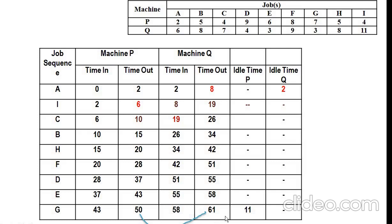The total elapsed time is the final out-time of machine Q. Regarding idle time: machine P is working continuously from 0 to 2, 2 to 6, 6 to 10, 10 to 15, 15 to 20, 20 to 28, 28 to 37, 37 to 43, and 43 to 50, so there is no idle time for machine P. Machine Q has idle time at the start. The completion time of machine Q is 61 and the completion time of machine P is 50, so the difference of 11 — wait, the idle time for machine Q is 2 hours (from 0 to 2), as the machine Q is idle while the first task completes on machine P.